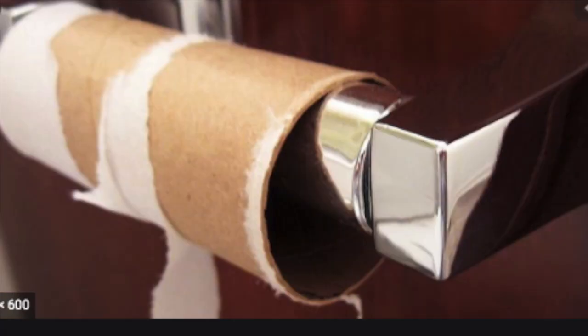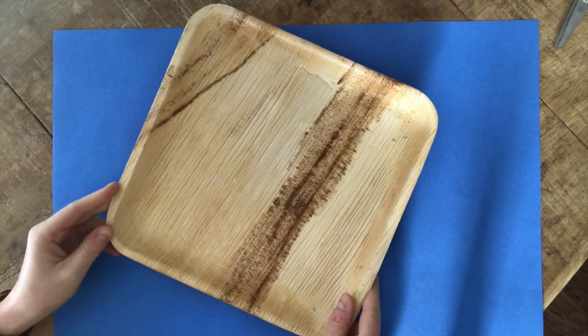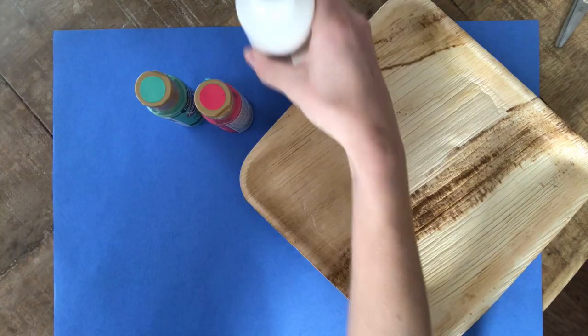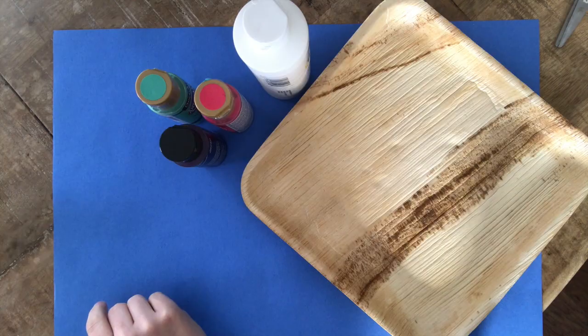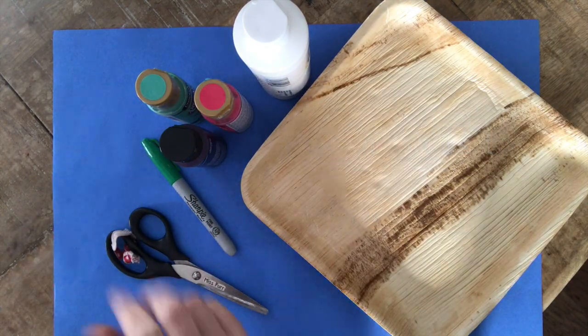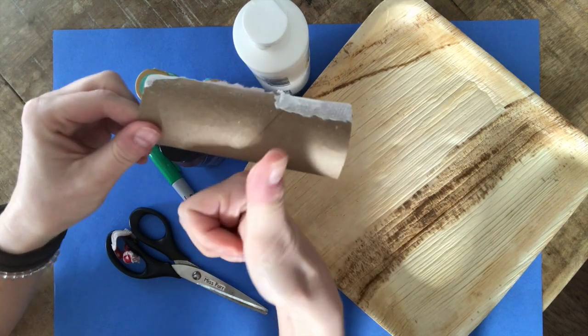You're going to need a piece of paper and a paper plate for your paint. Next, you'll need a variety of paints, a Sharpie marker, scissors, and a toilet paper roll.